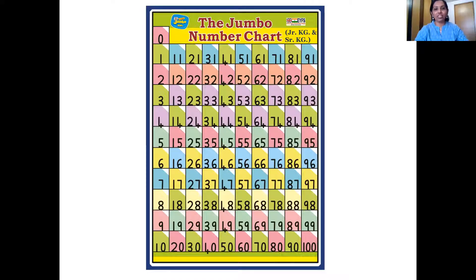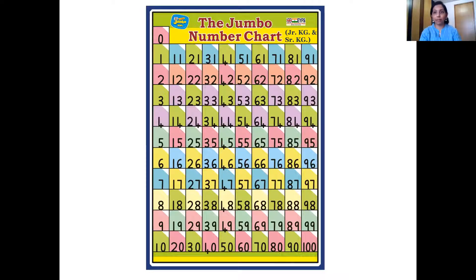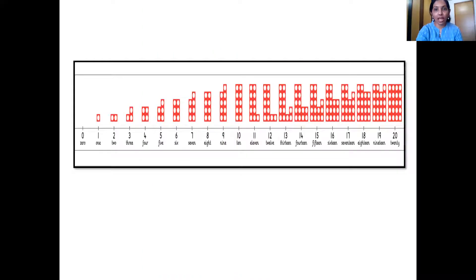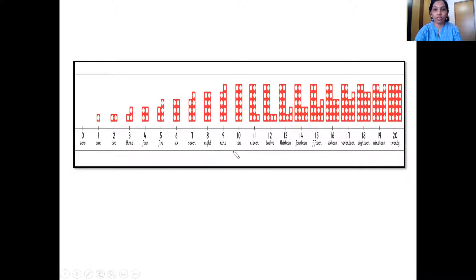Well done, children. Now let's move ahead. And if you can see in the number chart, all the numbers follow a sequence. Yes, it's the big number line where you can see all the numbers one after the other. They follow a sequence, right?